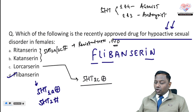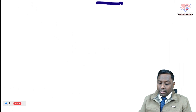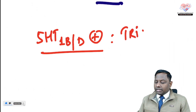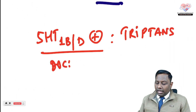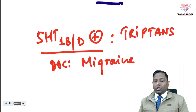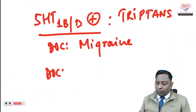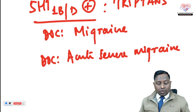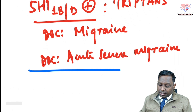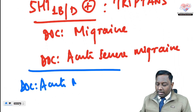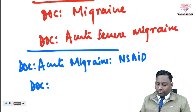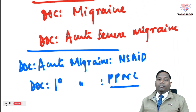The triptans are 5-HT1B/1D agonists — consistent with the rule that receptors 1 and 4 use agonists. Triptans are the drug of choice for migraine. If the examiner asks specifically about acute severe migraine non-responsive to NSAIDs, triptans are still the answer. However, if the question asks drug of choice for acute migraine, NSAIDs are used. For prophylaxis of migraine, propranolol — a beta blocker — is utilized.